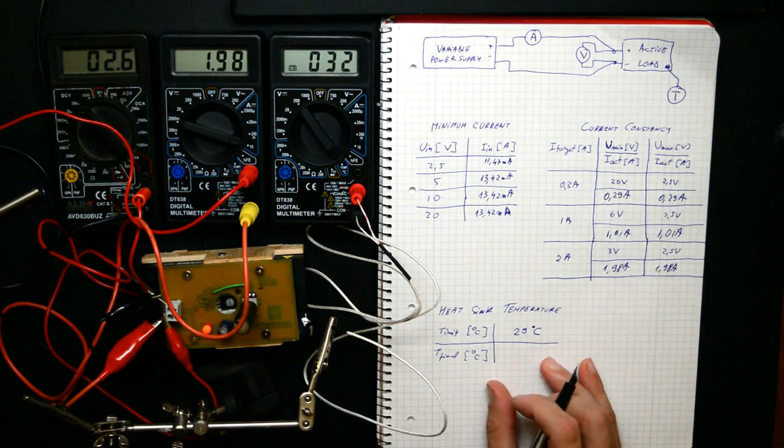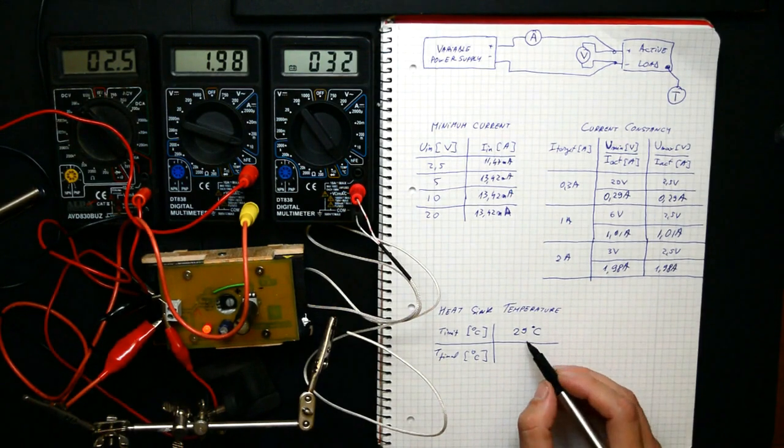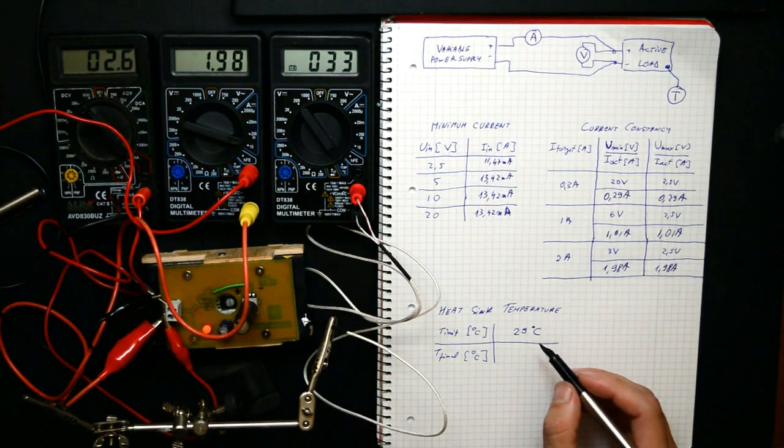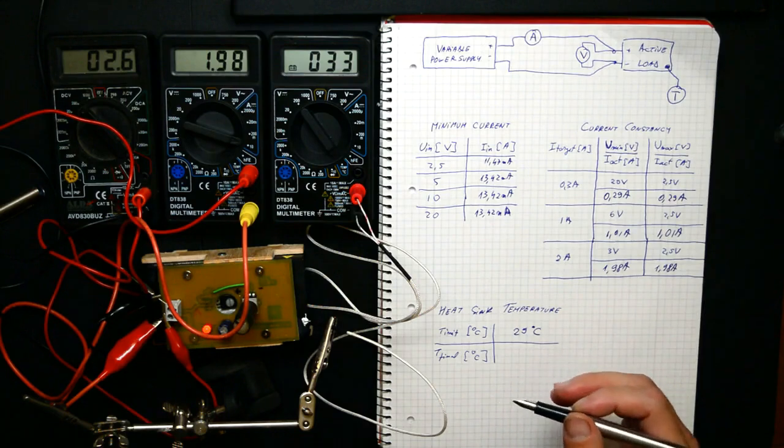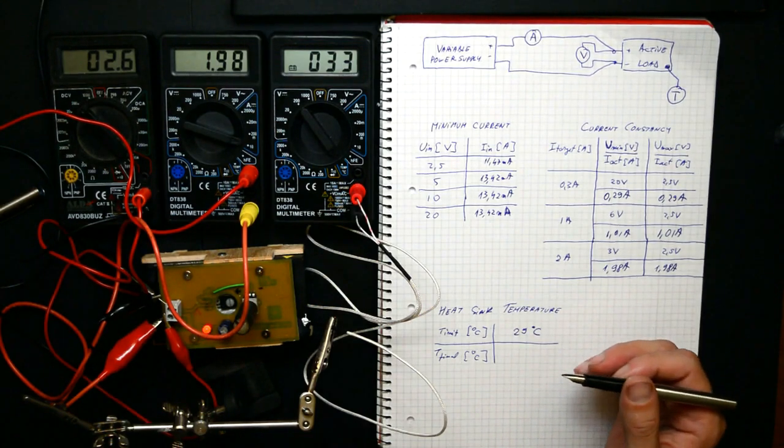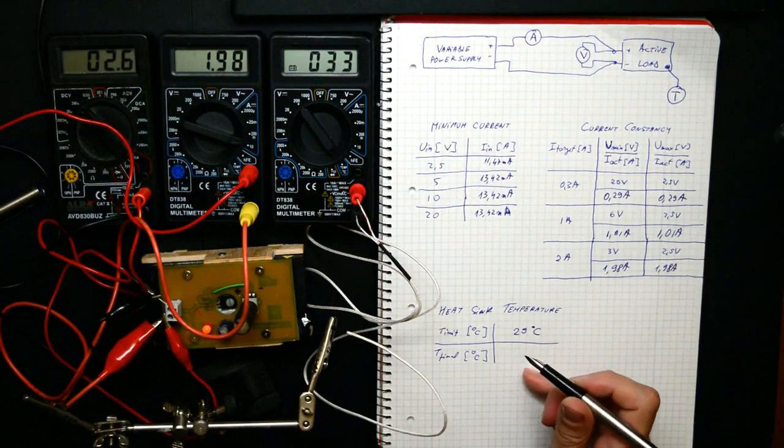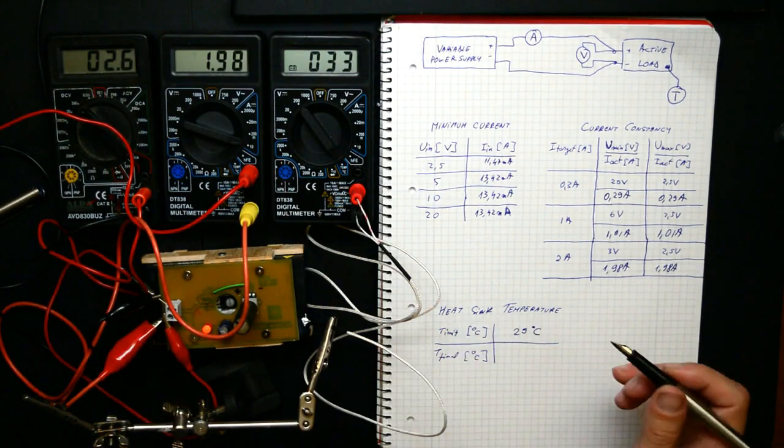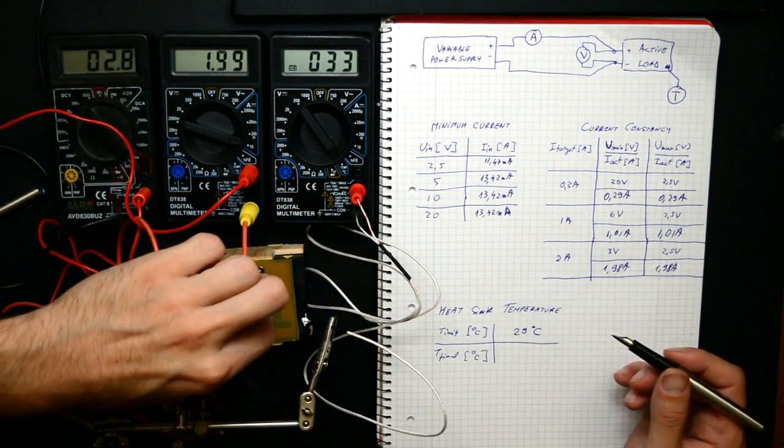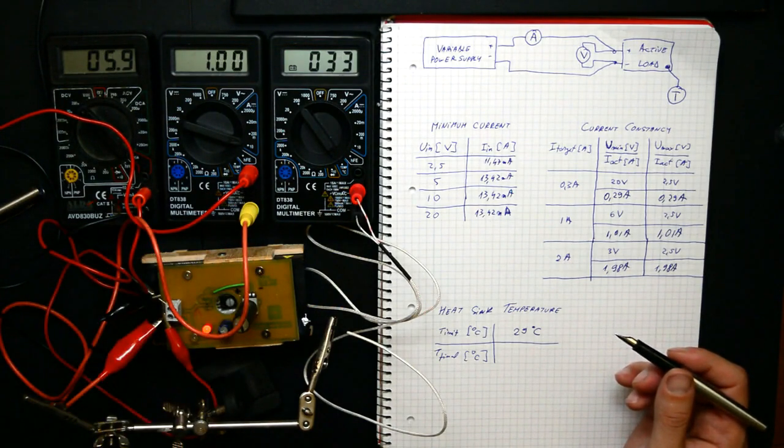Finally, we need to measure how much it heats up. For this I wrote down the initial temperature, it was 29 degrees, and now I will need to dissipate the maximum power that I will get to dissipate in practice, so 6 watts, and see exactly how hot my radiator gets. So for this I will set the current of 1 amp and 6 volts, so we have our 6 watts of power dissipated.